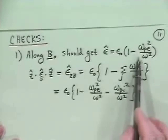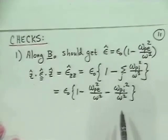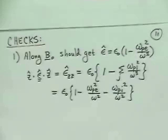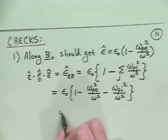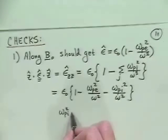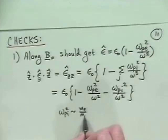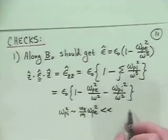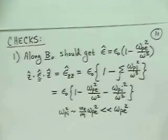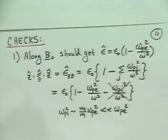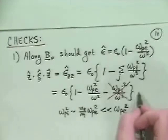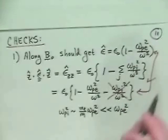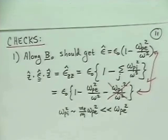Is this what I expected? Well, mostly, except I'm a little surprised to see the ions come in here. Should I worry about that? No, because it turns out that omega pi squared is approximately me over mi times omega pe squared — so it's 1 over 1836 times it — much less than omega pe squared. So this ion term is negligible compared to the electron term, and these two results are effectively the same. So that was our first check.